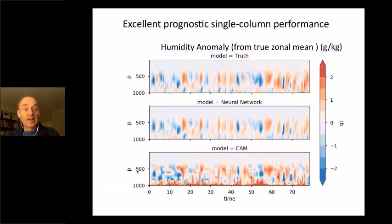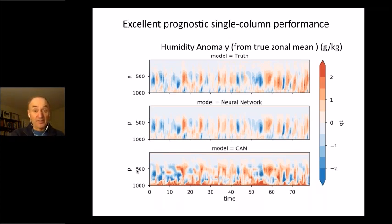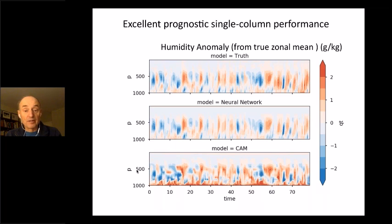Once you do this, you end up with much better single column model performance. The top shows a time series over 80 days from the original simulation, the middle is the neural network run in single column mode at one grid point on the equator, and the time series match almost perfectly. Another single column model from NCAR's Community Atmosphere Model doesn't do nearly as well when forced the same way.